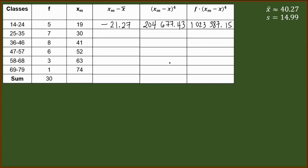By the way, we always round off the values to the second decimal number. Next row, we have 30 minus 40.27. That will give us negative 10.27. To get the fourth power of this, we have 11,124.53. And then multiply that to 7, we have 77,871.71.